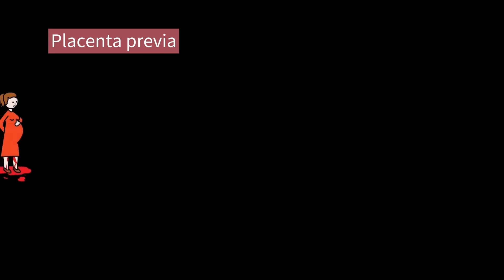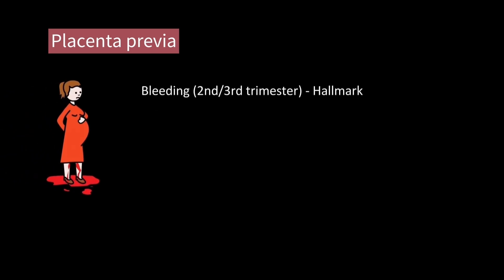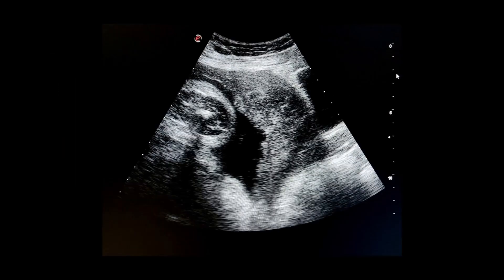Most patients present with bleeding in the second or third trimester, which is the hallmark of the disease. Risk factors include previous cesarean sections or higher number of pregnancies or multiparity. Like this patient who presented with bleeding and was diagnosed with complete placenta previa — as you can see, the placenta is completely covering and even extending beyond the internal os.